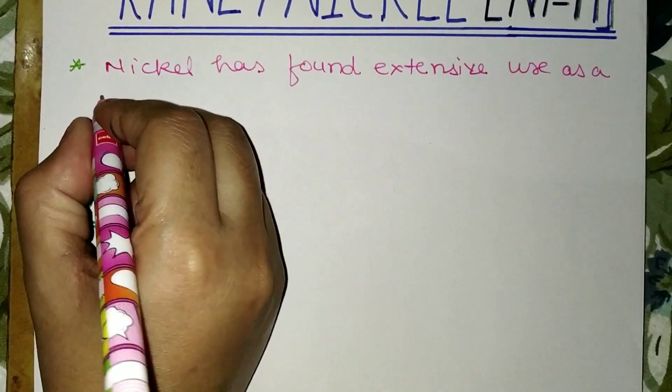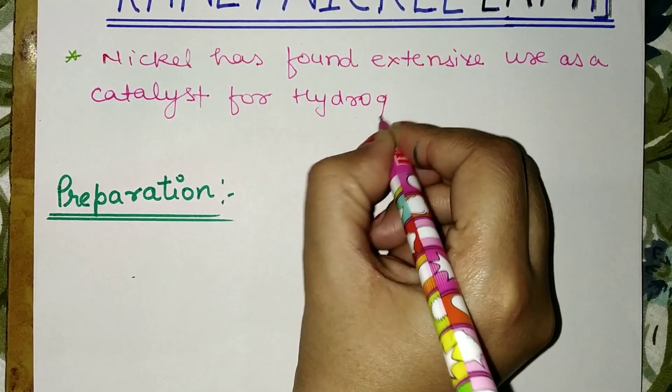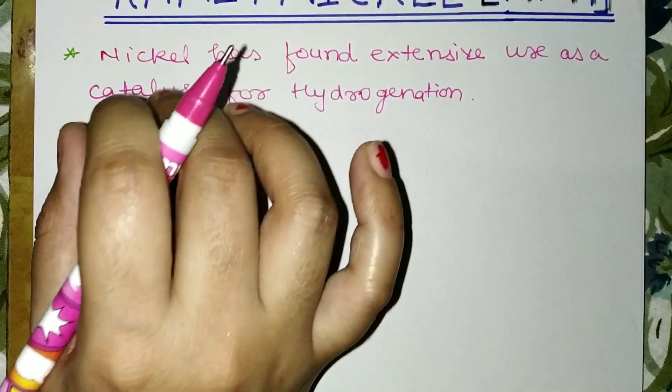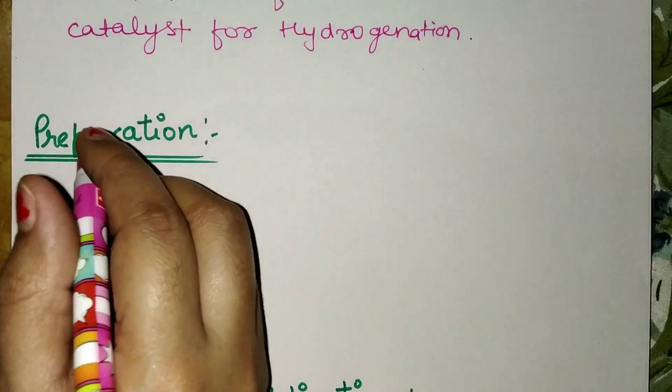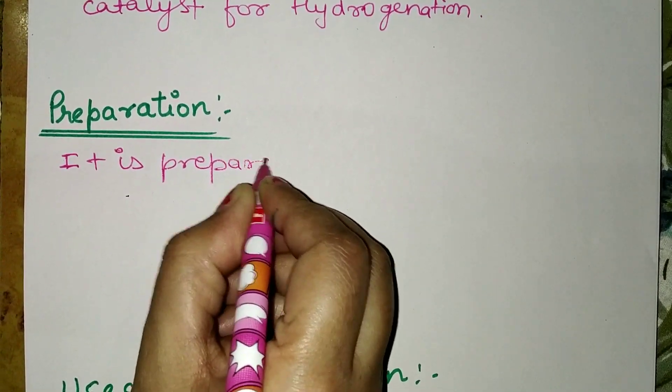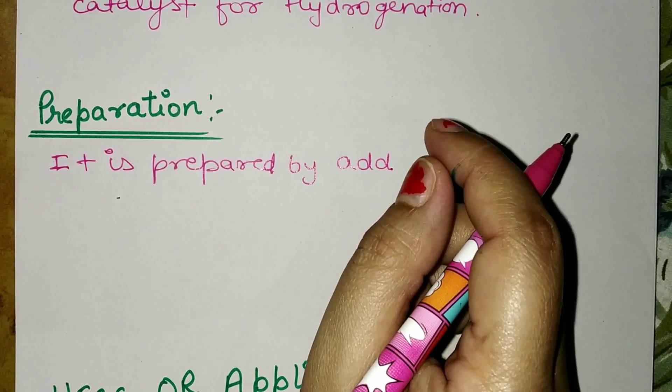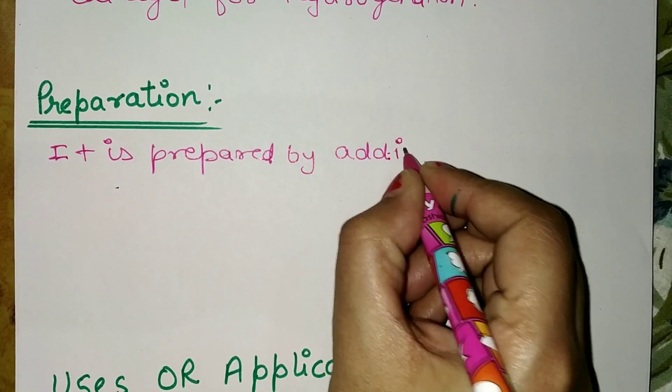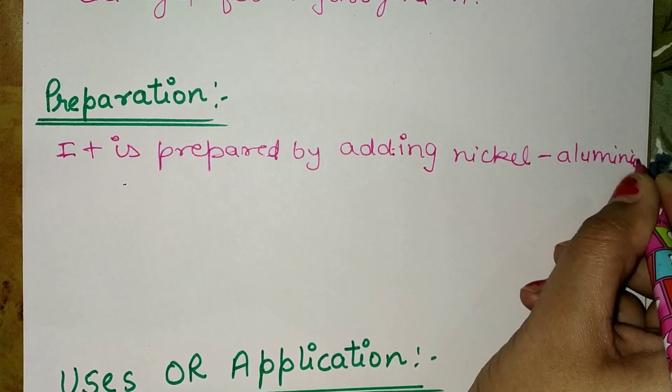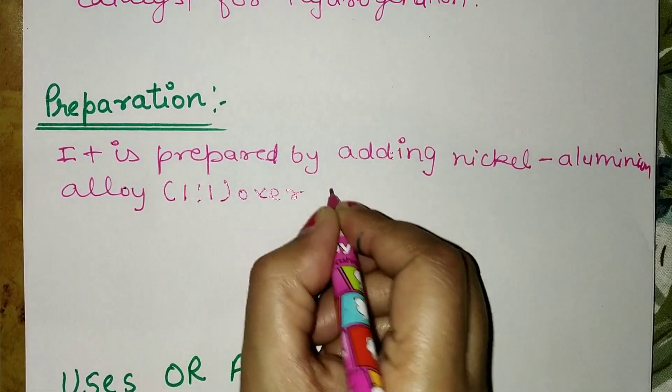Preparation of Raney nickel: It is prepared by adding nickel-aluminum alloy in a 1:1 ratio over a period of 2 or 3 hours